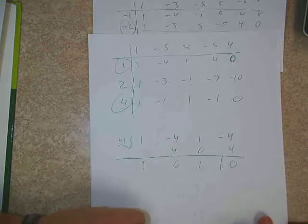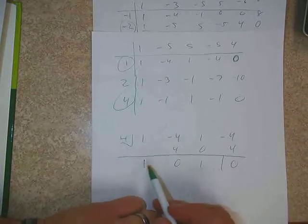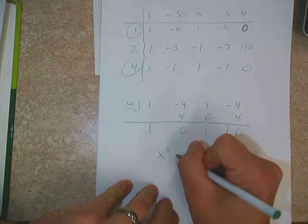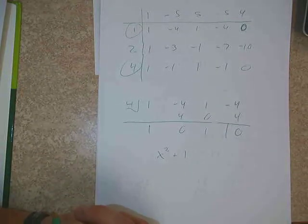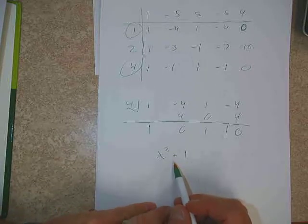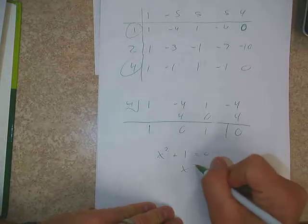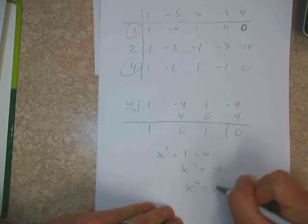So if we go 1, 4 there, 0, 0, 4, 0 — and divide by 4, we can break it down into a quadratic equation. And that quadratic equation is just x squared plus 1. Now we don't have to divide anymore because we can solve this directly.